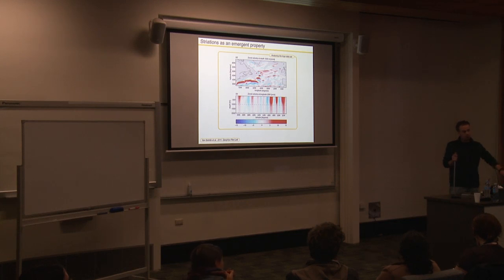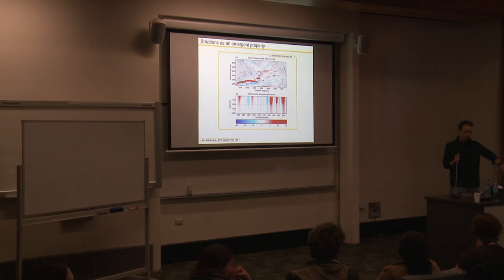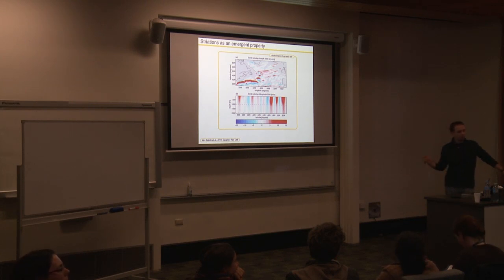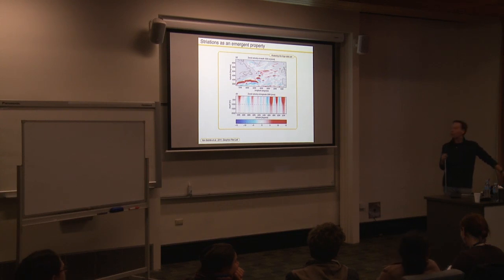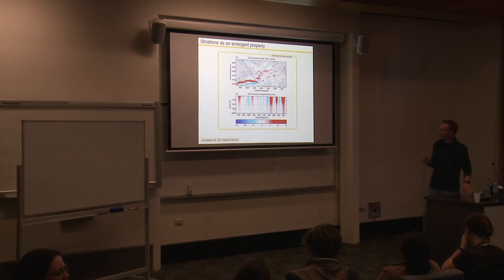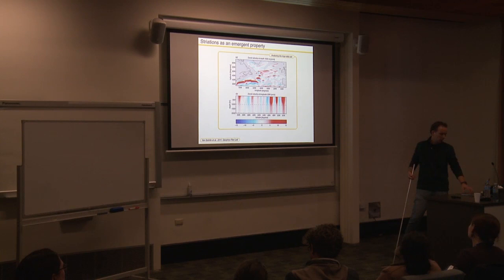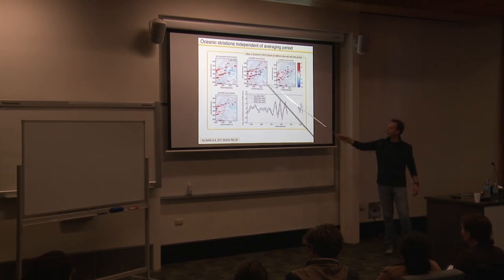Agulhas rings propagate at roughly 5 cm/s, taking about 3–4 years to cross the South Pacific. The 3-year Argo dataset used in the paper is quite short, and critics suggested the striations were just residual eddy streaks not yet averaged out. However, the analysis comparing disjunct time periods, which still show jets at the same locations, argues against this interpretation.